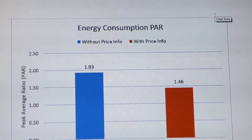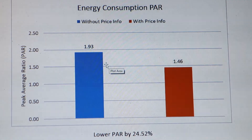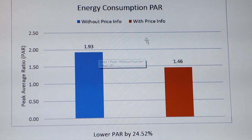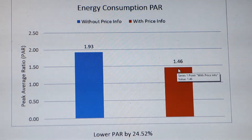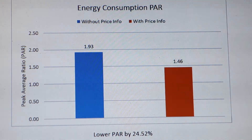The second result shows that without pricing information, the peak-to-average power ratio is 1.93. With pricing information and adaptive control, we achieve a PAR of 1.46. So we reduce the PAR by 24.52%, which is a significant drop.